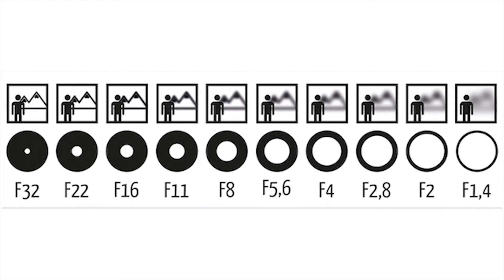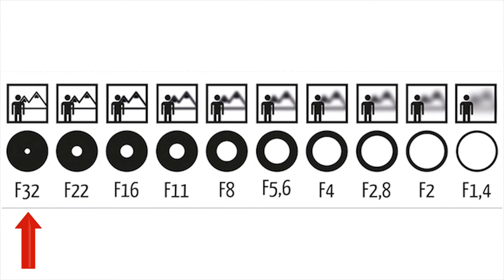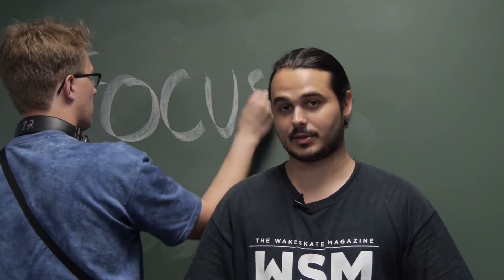Often in interviews, filmmakers like to have a shallow focus with the background blurred. One of the most common methods of achieving shallow focus is to use a wide open aperture. Conversely, a small or narrow aperture will give you deep focus. We'll discuss this in more detail in the focus lesson along with other methods of achieving shallow focus.